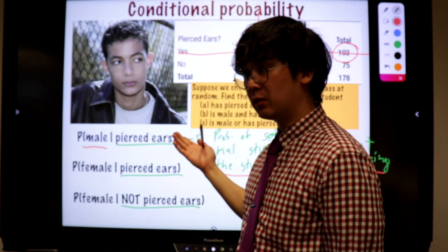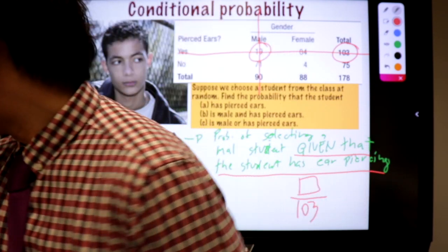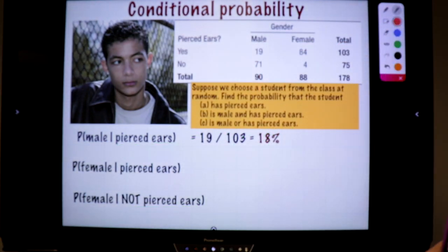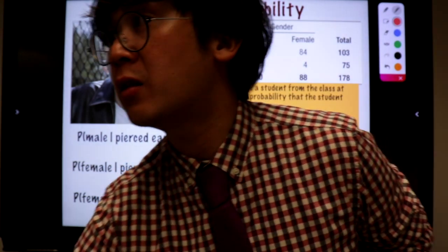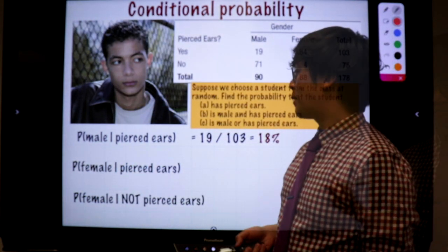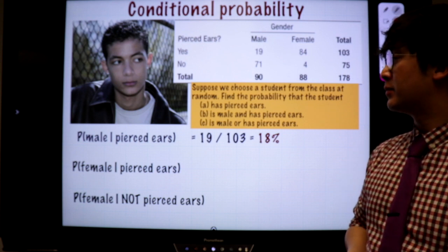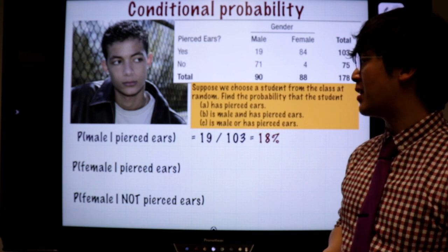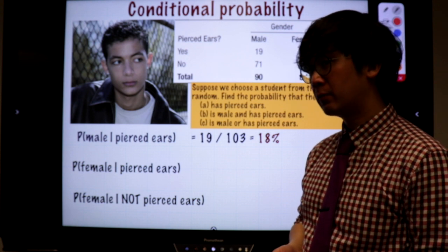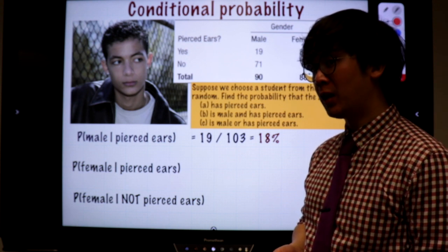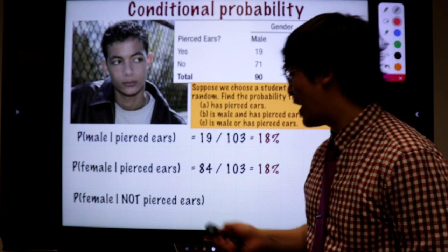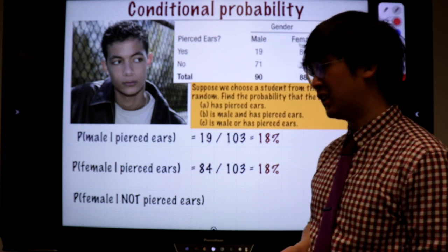So that is how you compute conditional probability with a two-way table. For number one, your answer is 19 out of 103. What's the probability that a student selected is female given that she has ear piercing? That's 84 out of 103. What about female given not pierced ears?